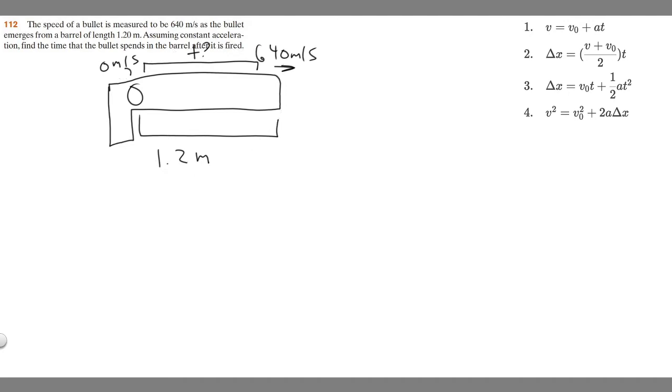So what we want to do first is just write down our given, what each of these variables represent. So v sub 0, our thing is going to start at rest, so our initial velocity is going to be 0 meters per second. We're given a distance, and generally we call that delta x because we're working in the x direction. And we're going to call that 1.2 meters.